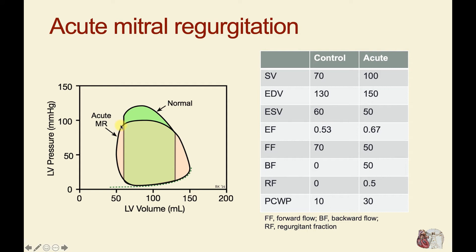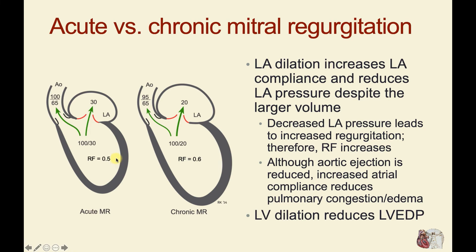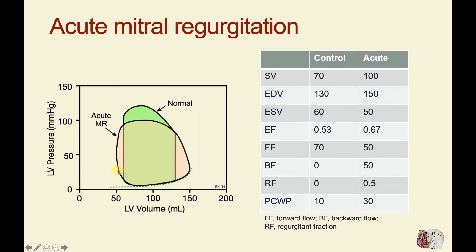Even after the aortic valve closes, the volume in the ventricle continues to decline a small amount because blood flows from the ventricle — which has higher pressure than the left atrium — so regurgitation continues into what would normally be the isovolumetric relaxation phase. Then at the peak of the V-wave, left atrial pressure exceeds left ventricular pressure and the ventricle begins to fill. In acute mitral regurg, stroke volume is increased to about 100 mLs, end-diastolic volume is greater, end-systolic volume is reduced, and ejection fraction is higher than control.